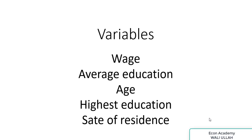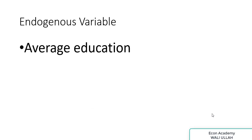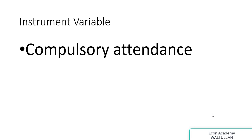My variables are wage, average education, age, highest education, and state of residence. The wage variable is the dependent variable, while average education, age, highest education, and state of residence are independent variables. I have taken average education as an endogenous variable for this video. You can find your endogenous variable using the Hausman test. I have taken compulsory attendance as an instrumental variable.